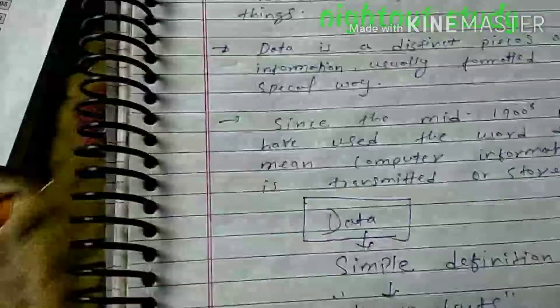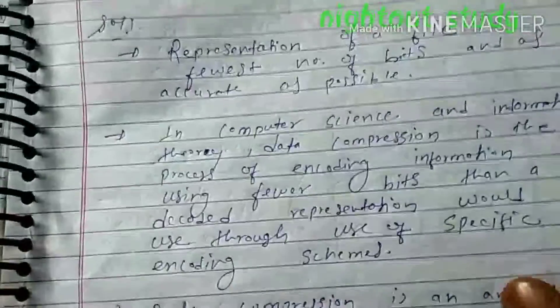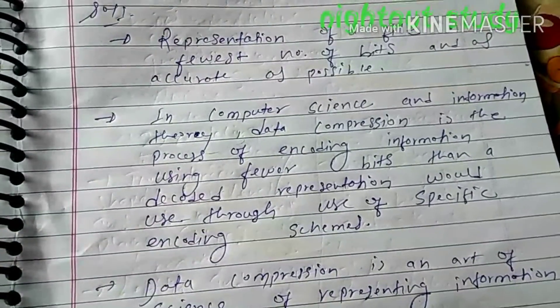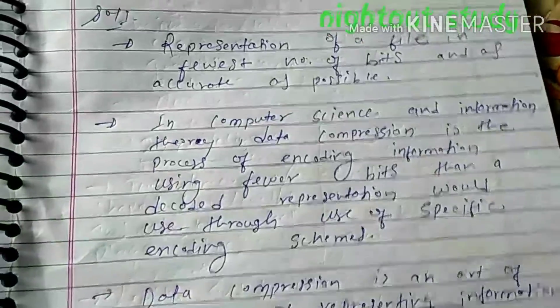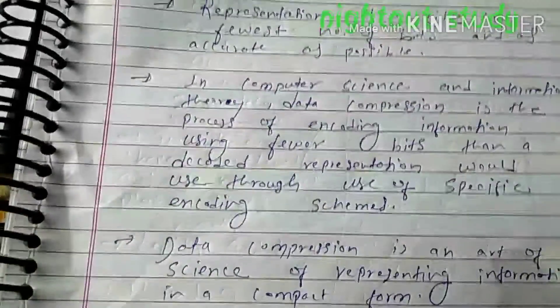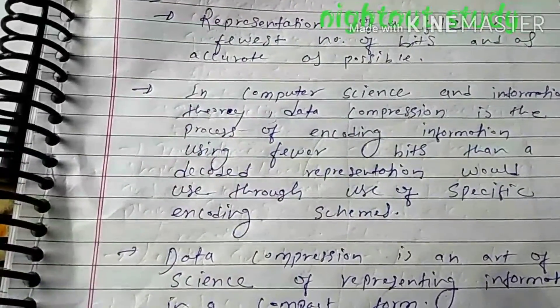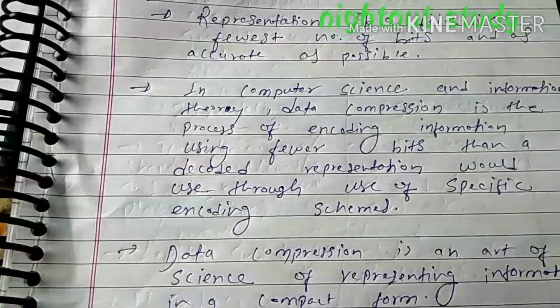If we want to explain what data compression is, then we can say that data compression is a representation of files in the fewest number of bits as accurate as possible. Data compression is nothing but a representation of any type of files in a few number of bits.